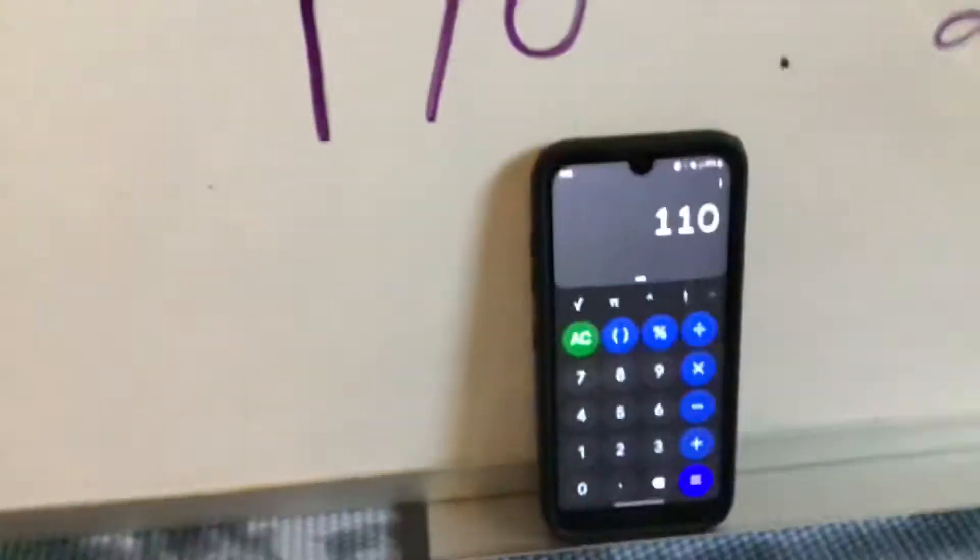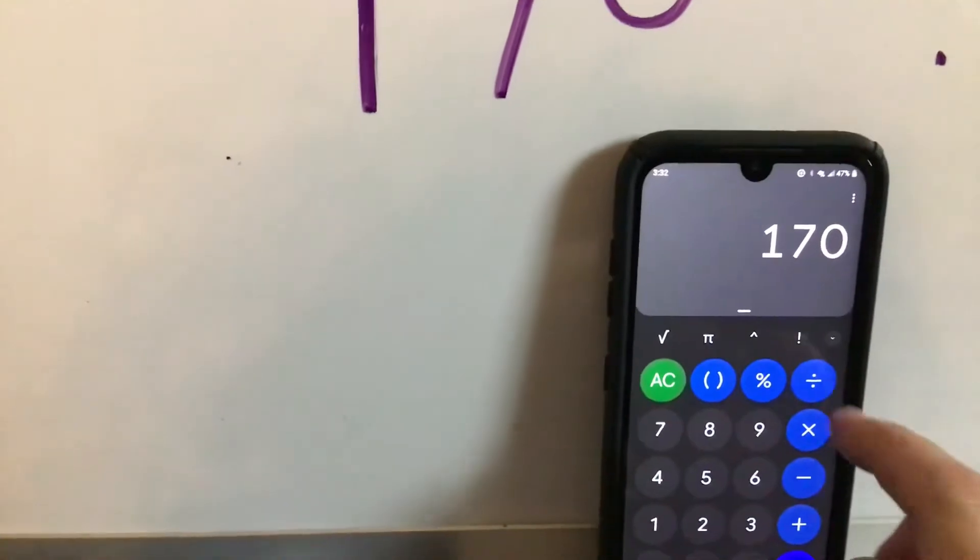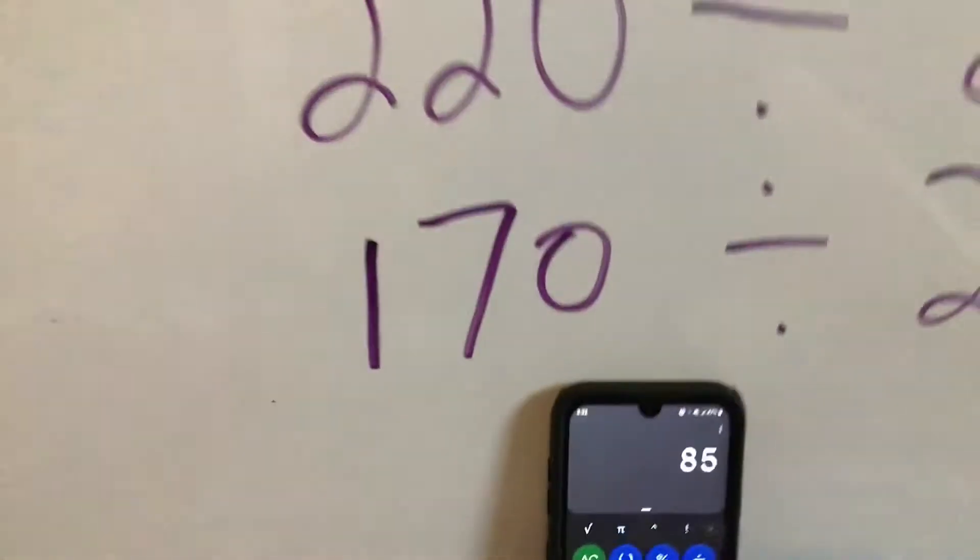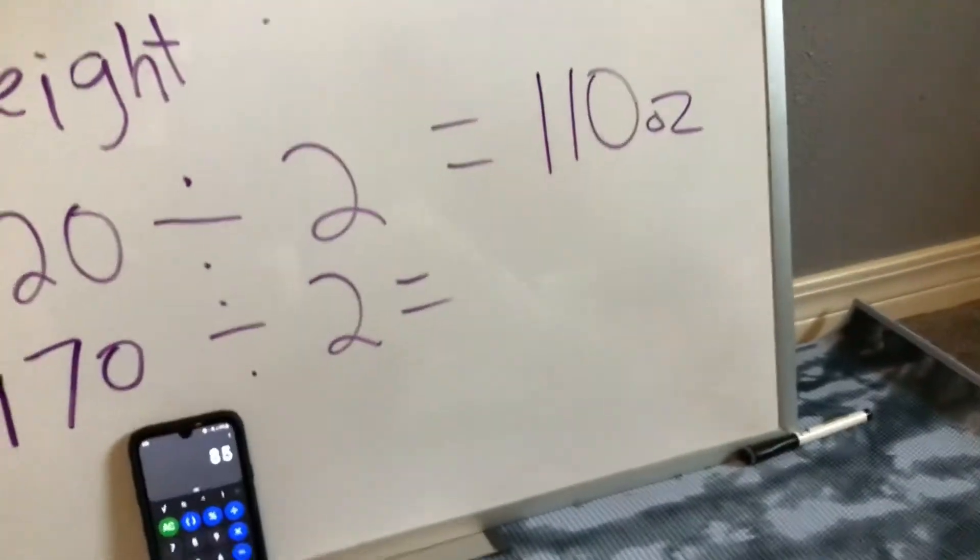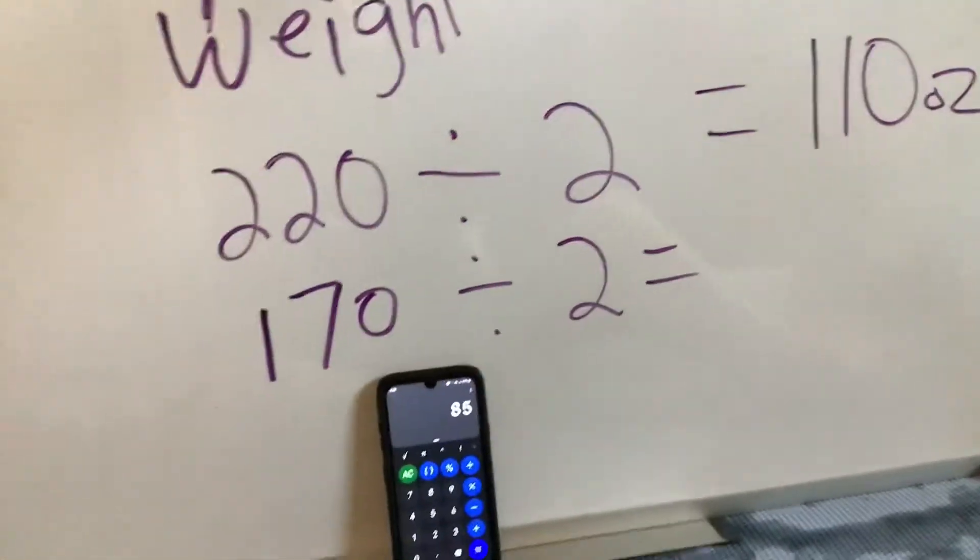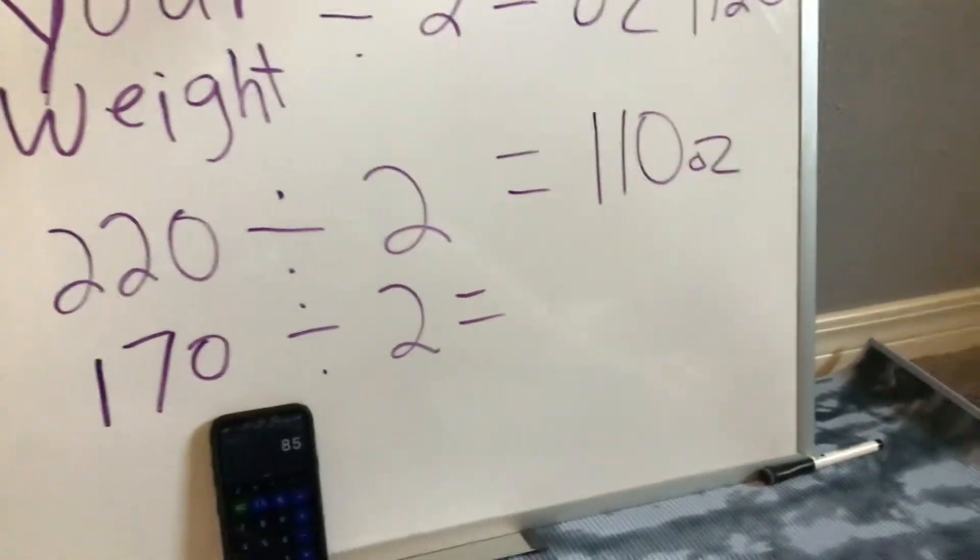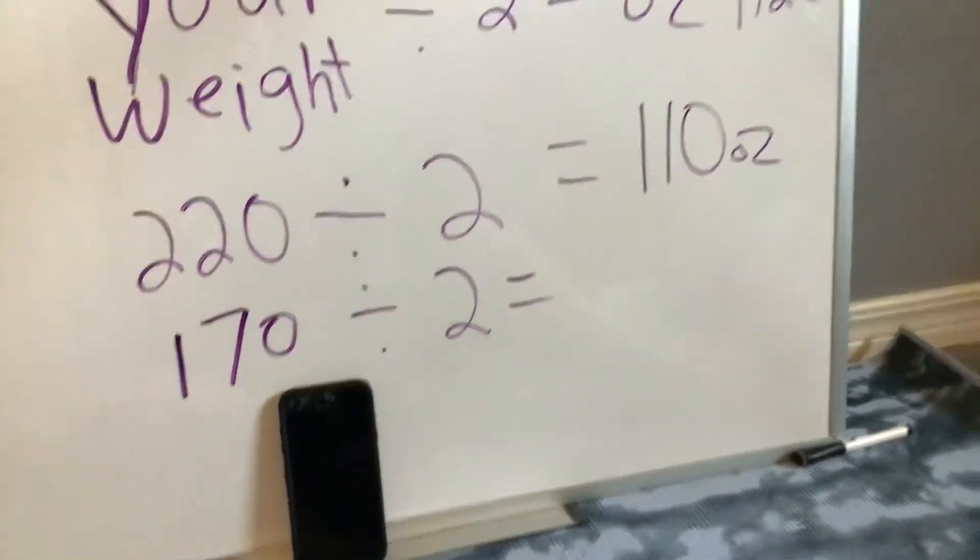So you can see that the more you weigh, the amount of water—just to make sure we have an accurate amount. I'm gonna clear that off and put 170 divided by two: 85 ounces of water is how much I should drink per day. So you can see that the more you weigh, the more water you need to be putting in your body every day.